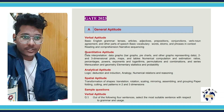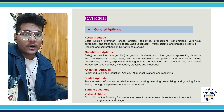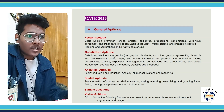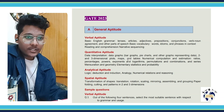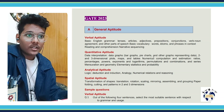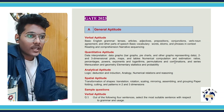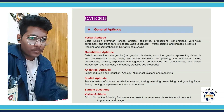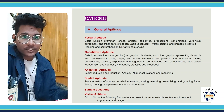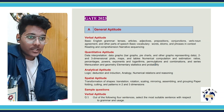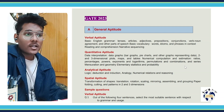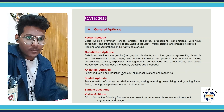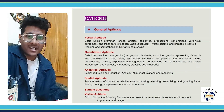The next part is quantitative aptitude. This section covers data interpretation — data graphs like bar graphs, pie charts, 2D, 3D plots, maps, and tables. Then we have numerical computation and estimation which includes ratios, percentages, powers, exponents, and logarithms. Then we have permutation and combination, series, mensuration, symmetry, elementary statistics, and probability.